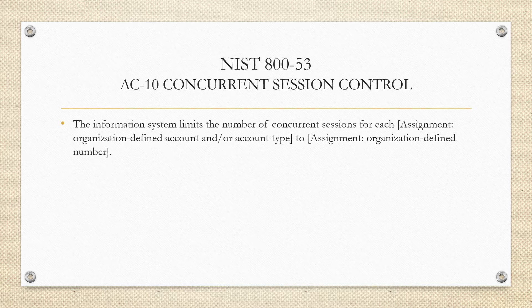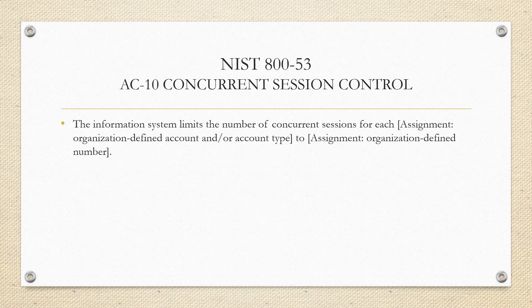So the description of this control reads: the information system limits the number of concurrent sessions for each organization-defined account or account type to an organization-defined number. So what does that mean? How many concurrent sessions can a specific account or an account type be logged into at once?